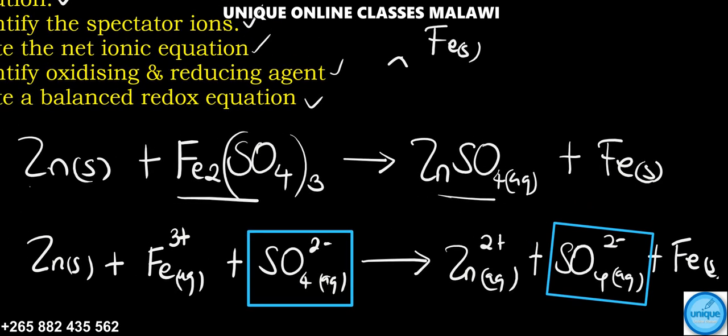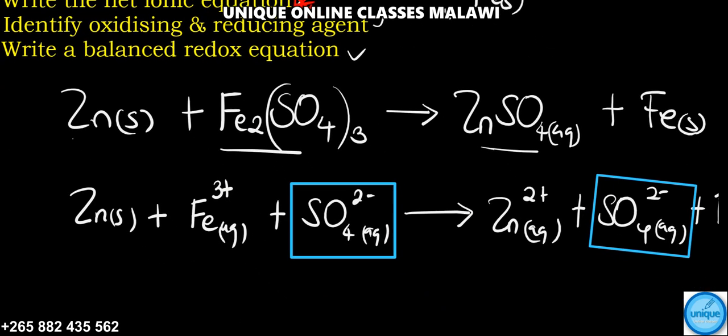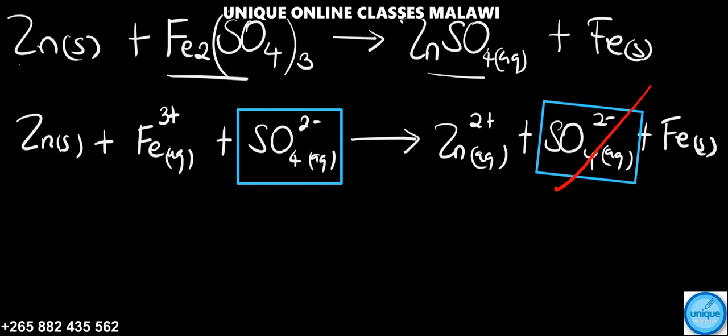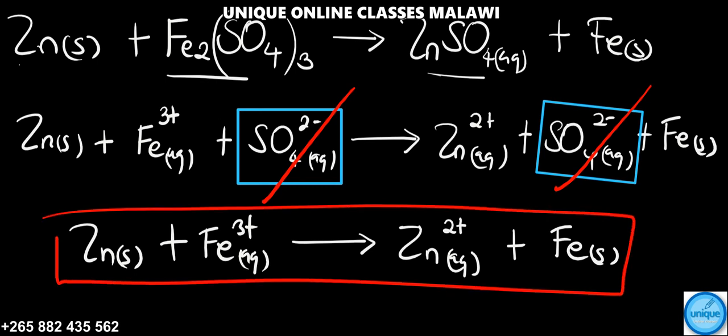We should write the net ionic equation. After we cancel the spectator ions, we are going to remain with: Zn solid plus Fe³⁺ aqueous gives Zn²⁺ aqueous plus Fe solid. So this is our net ionic equation.